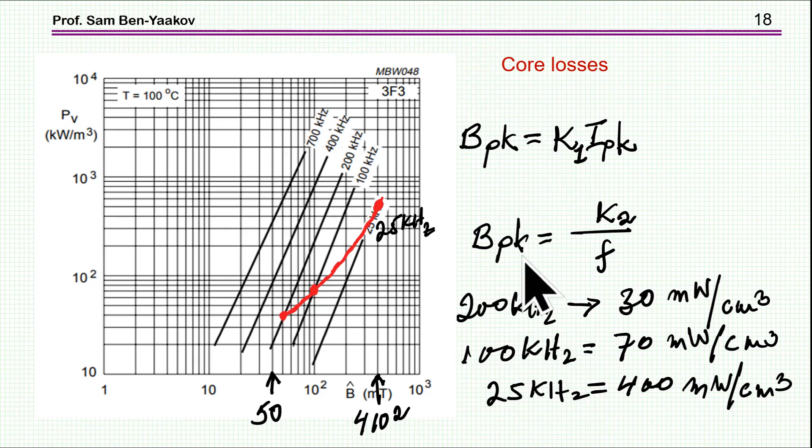The higher the frequency, the lower is the peak to peak value of the current. Therefore the peak to peak value of the magnetic flux density. So actually as I go to 200, I have a lower loss.